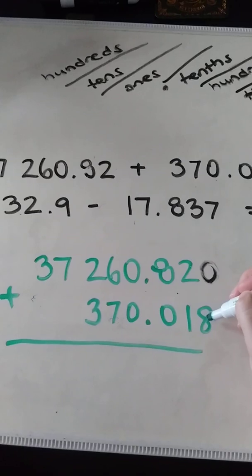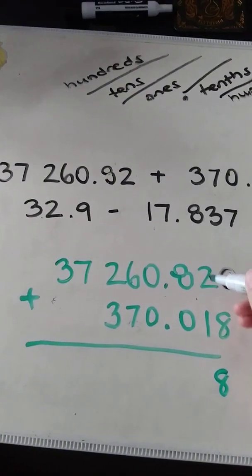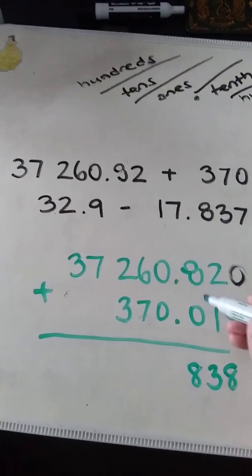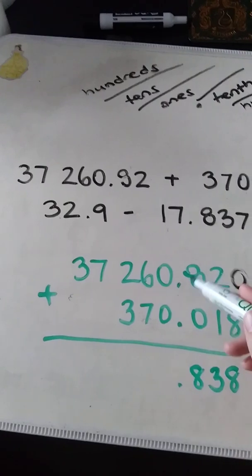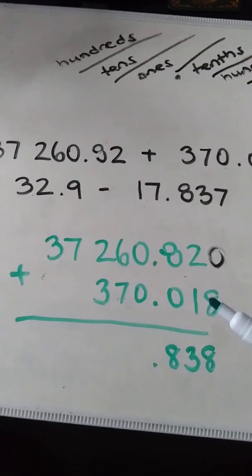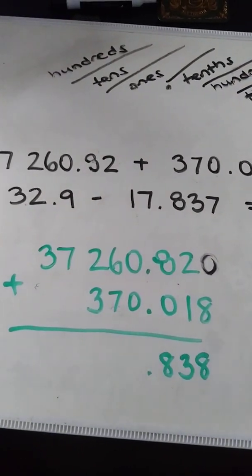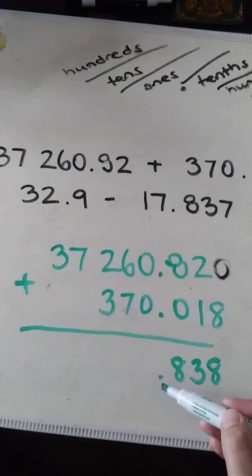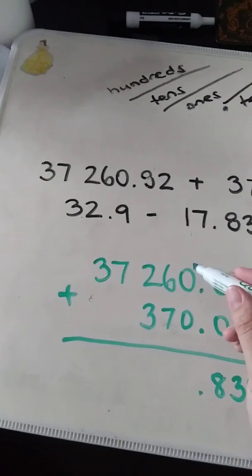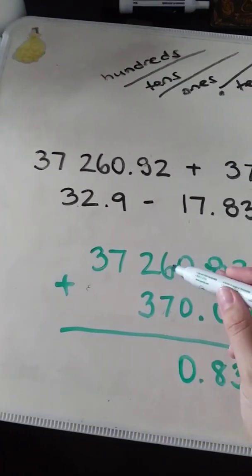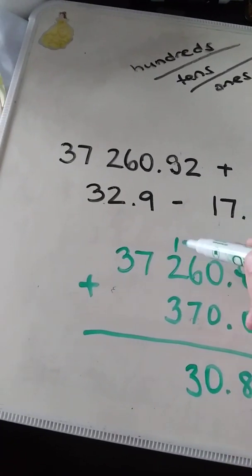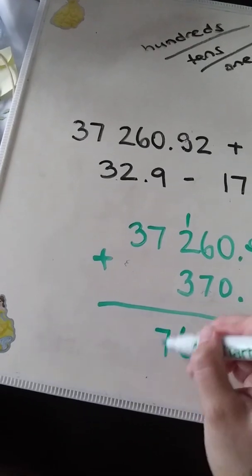So let's go. 0 plus 8 is 8. 2 plus 1 is 3. 8 plus 0 is 8. Make sure I bring down the decimal at the same time. Some people do it at the end, but it's easy to forget that way. So I would just recommend to bring it down when you're there. Because if I don't remember to bring down the decimal, I change the number completely. So 0 plus 0 is 0. 6 plus 7 is 13. 3 plus 2 plus 1 is 6. And I have a 7 and then a 3.